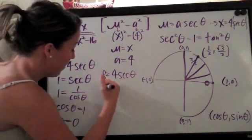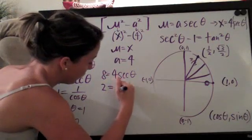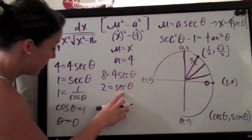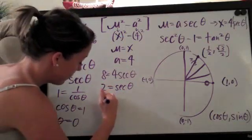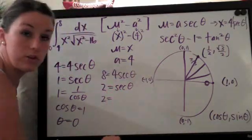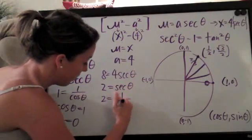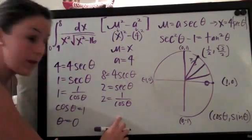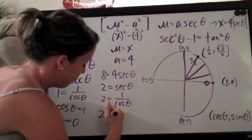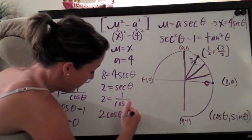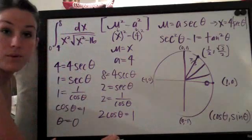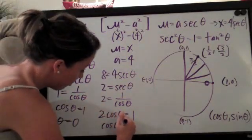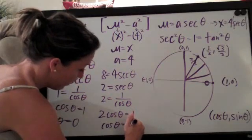We divide both sides by four and we get two equals secant theta, and then we change this to be one over cosine, because we're aiming toward using the unit circle so we want to get this in terms of cosine. So it's one over cosine theta. We multiply both sides by cosine theta and we get two cosine theta equals one, and then we divide both sides by two to get cosine on its own and we get cosine theta equals one half.